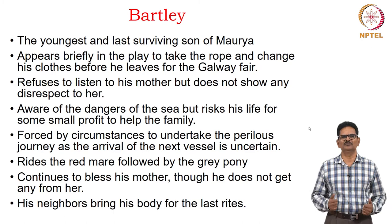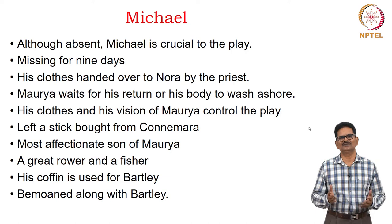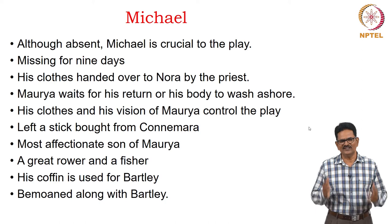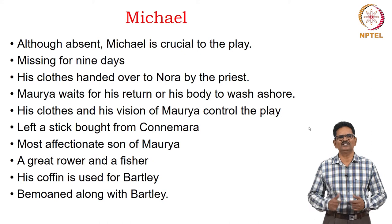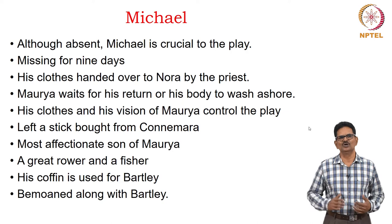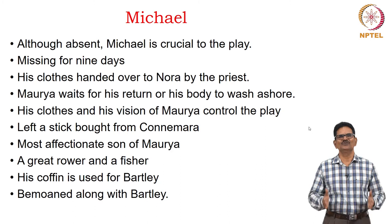Michael is the son of Maurya whom she always loves and remembers often. He has been missing for nine days, but his clothes have been handed over to Nora by the priest. Maurya waits for his return or his body. Michael had left a stick he bought from Connemara to his mother. He is considered a great rower and fisher. A coffin had been prepared for him, but it ends up being used for Bartley.